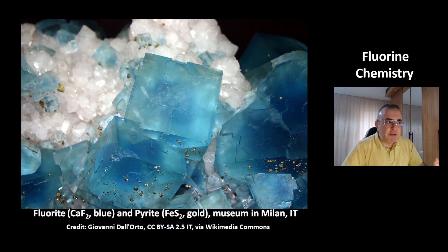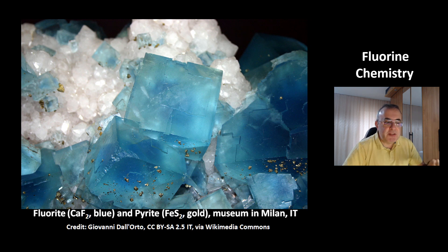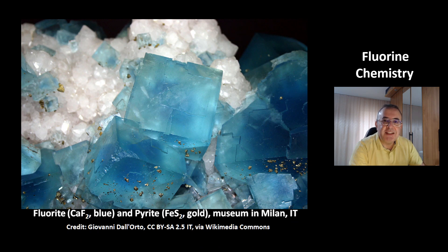This is a picture of fluorite — blue crystals. The small crystals are pyrite, which is iron disulfide. I have another video about gold where there is a comparison between pyrite, also called fool's gold, and real gold — you can check it out on YouTube. This picture is from a museum in Milan, Italy, and it's a very nice picture of these fluorite crystals. That was today's video about the chemical element fluorine. Thank you for watching, have a nice day, bye-bye.